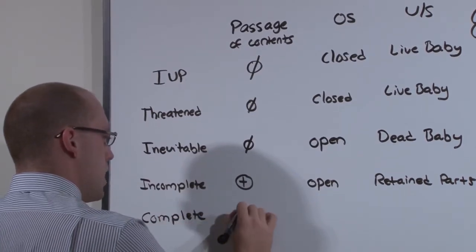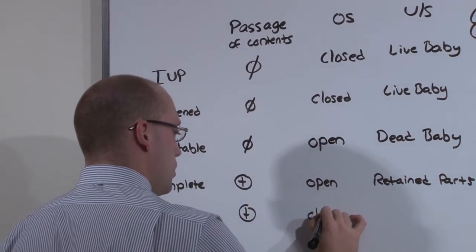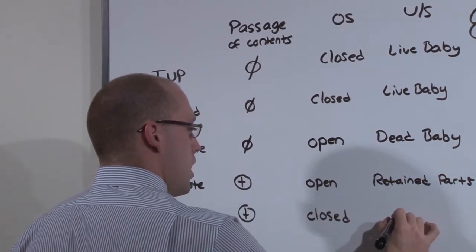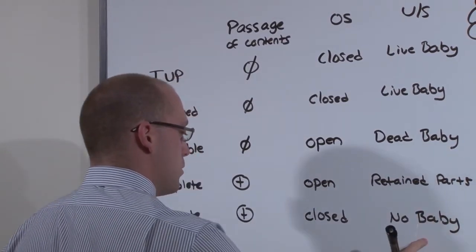In the complete abortion, there has already been passage of clots. All the clots have been removed, so her os is now closed, and there is no baby on ultrasound. That is, her uterus is empty.